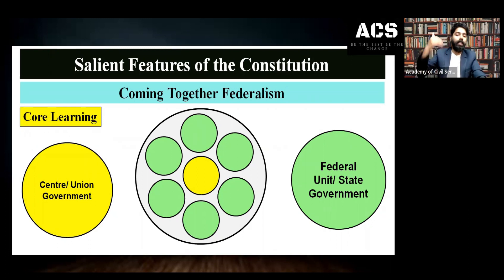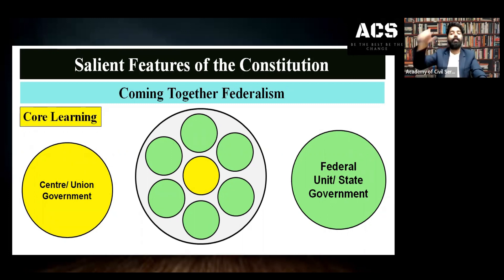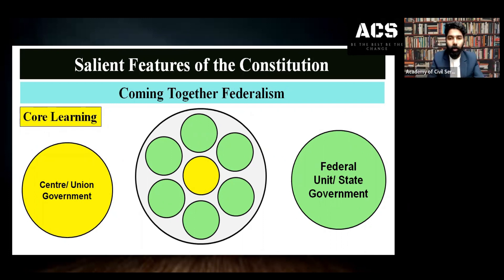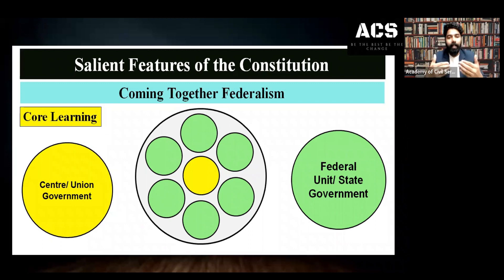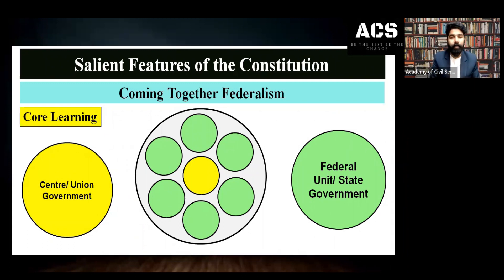In the United States, you can see the central government — that is the federal government — and the federal units, that is the states. They formed the federation by agreement and treaty and by way of integration, also called coming together federalism. And they are enjoying equal power, which is why US federalism is called symmetrical federalism.